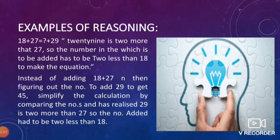Example of reasoning: 18 plus 27 is equal to x plus 29, where 29 is 2 more than 27. So the number to be added has to be 2 less than 18 to balance the equation. Instead of adding 18 plus 27 and then figuring out the number to add to 29 to get 45, simplify by comparing: 29 is 2 more than 27, so the number added has to be 2 less than 18, which is 16.